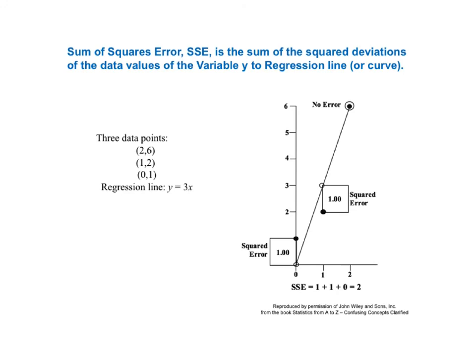Sum of squares error, SSE, is the sum of the squared deviations of the data values of variable Y to the regression line or curve. In this simple example, there are only three data points: XY values of (2, 6), (1, 2), and (0, 1), illustrated by three black dots. The regression line is defined by the formula Y equals 3X. There is no error for the point (2, 6) — it is on the regression line. The other two points are each one unit away, so their error is 1 and squared error is also 1. SSE equals 0 plus 1 plus 1, which equals 2.